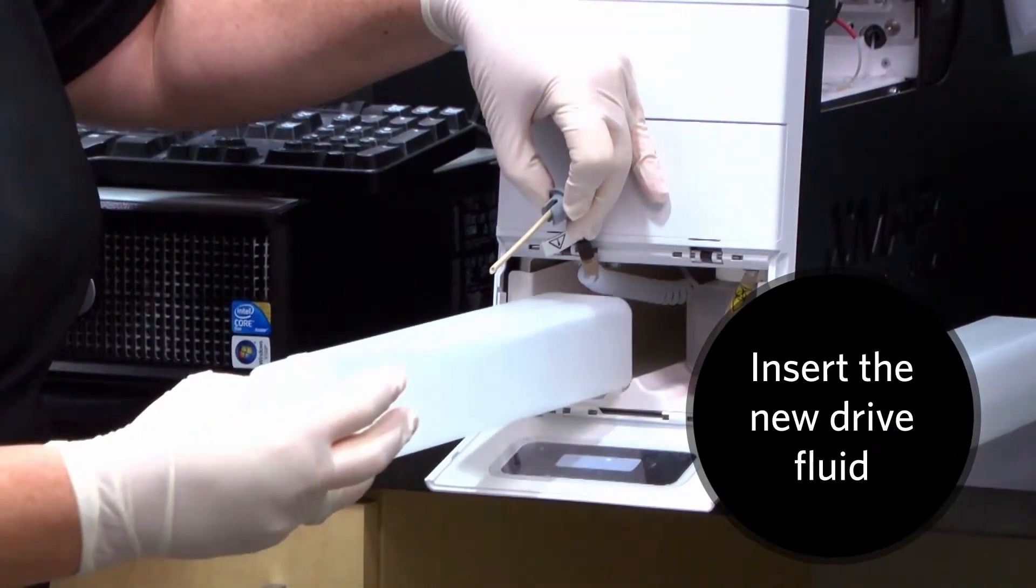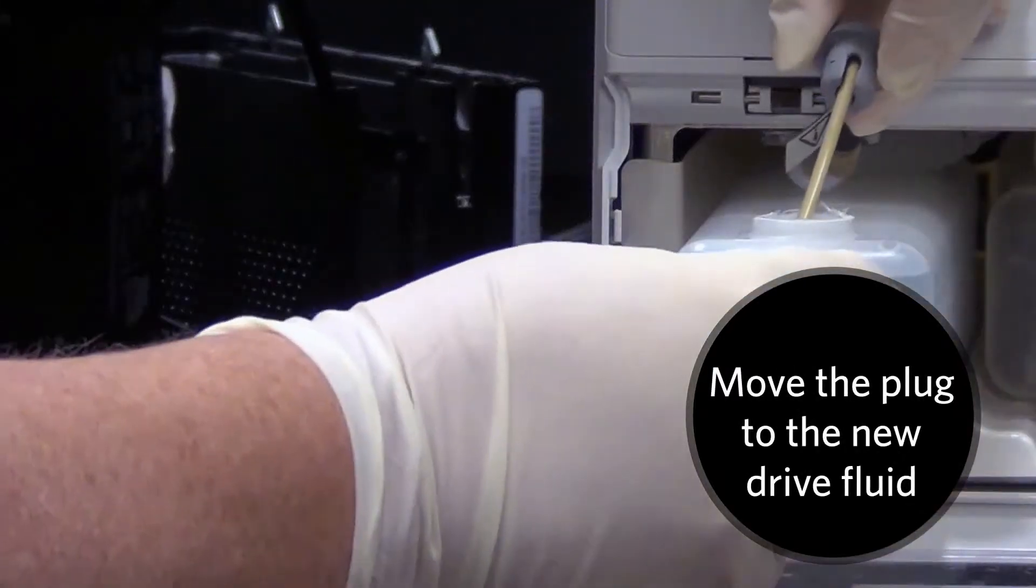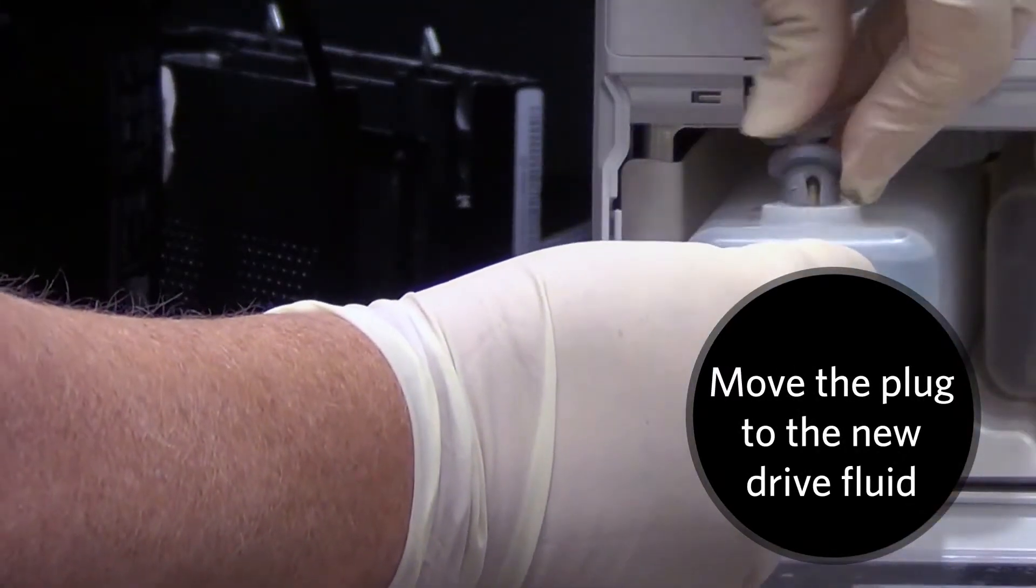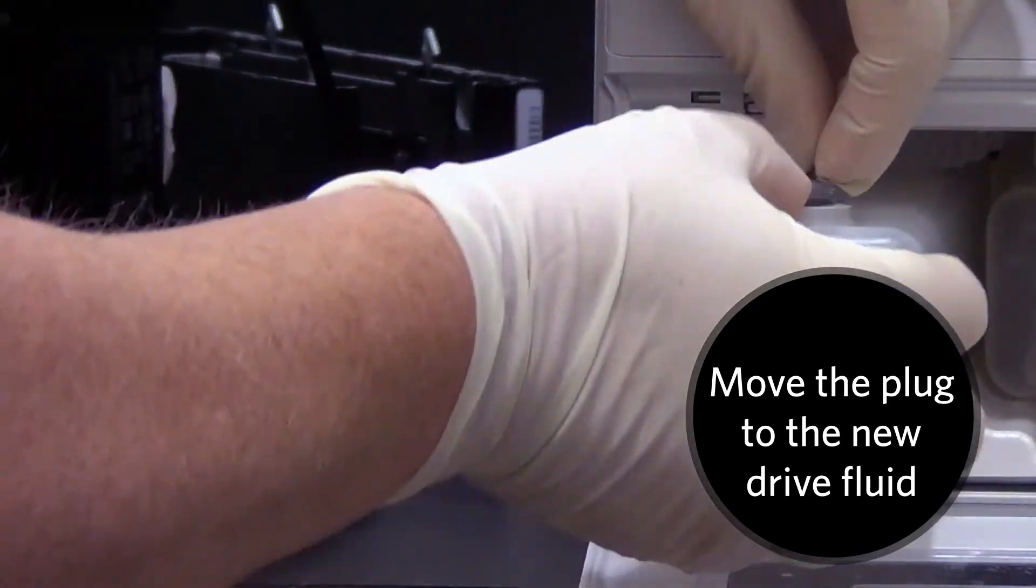Insert the new dry fluid container part way into the fluid compartment. Connect the tube and plug to the opening on the top of the new dry fluid container.